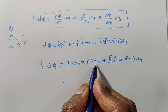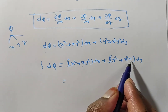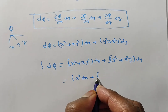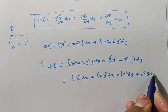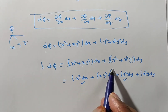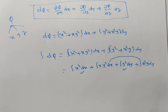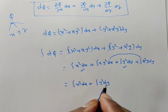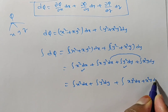Separating the integrable terms: ∫x²dx + ∫y²dy are straightforward. The remaining terms ∫xy²dx + ∫x²y dy cannot be integrated directly with respect to a single variable. So we go for the inspection method. By the inspection method, we separate these terms and handle them together.